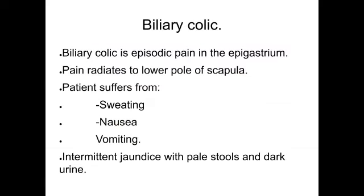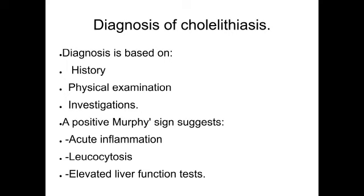Biliary colic is an episodic pain in the epigastrium. Pain radiates to the lower pole of the scapula, epigastrium, and right hypochondrium. The patient suffers from sweating, nausea, and vomiting. Intermittent jaundice with pale stools and dark urine is characteristic of biliary colic. Diagnosis of cholelithiasis is based on history, physical examination, and investigations. A positive Murphy's sign suggests acute inflammation, along with leukocytosis and deranged liver function tests.